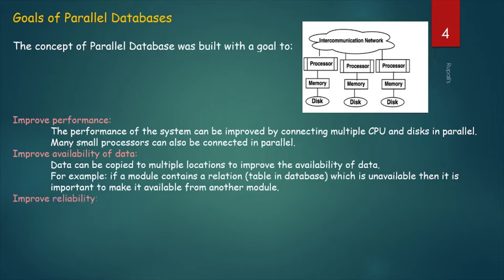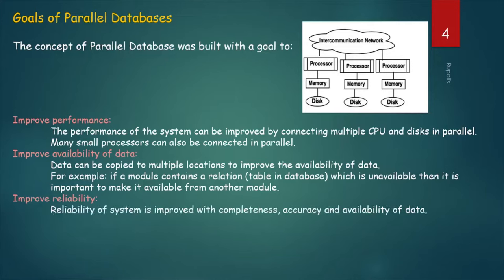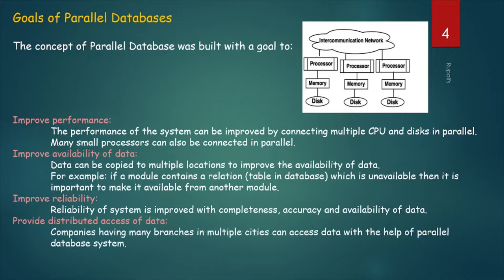Next, Improve Reliability. Reliability of the system is improved with completeness, accuracy, and availability of data. When one site fails, execution can continue with another available site which has a copy of data, making the system more reliable. The last goal is to provide distributed access of data. Companies having many branches in multiple cities can access data with the help of a parallel database system.